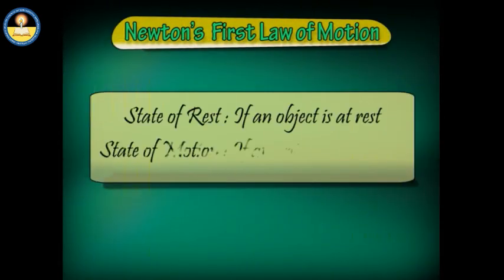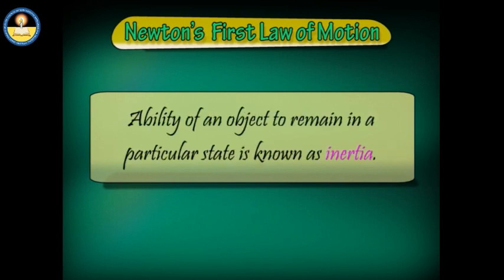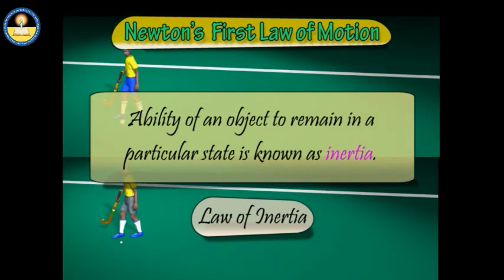Both states of motion indicate an important property of matter: to oppose any change in the state of motion or rest. The ability of an object to remain in a particular state is known as inertia. Therefore, Newton's first law is also known as the law of inertia. In general, inertia is a measure of the response of an object to an external force.